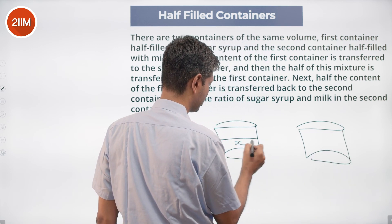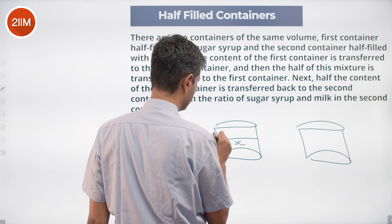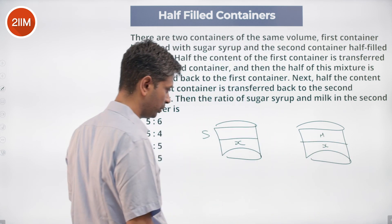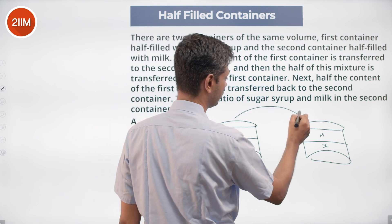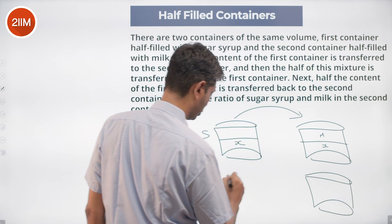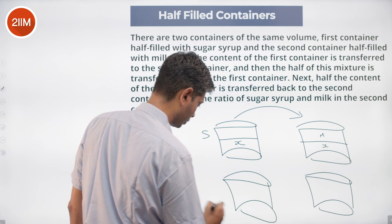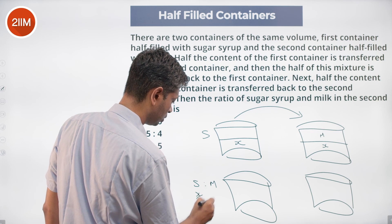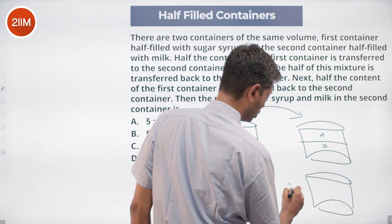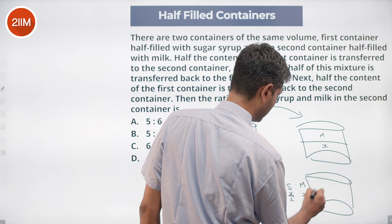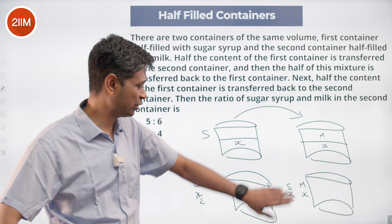Let's say x of sugar syrup, x of milk. What do we do? We transition from here to here. When we do that, step 2, this will become sugar and milk. Sugar will become x by 2, no milk. Sugar is to milk, sugar will become x by 2, milk continues to be x, and then we shift from here to here.